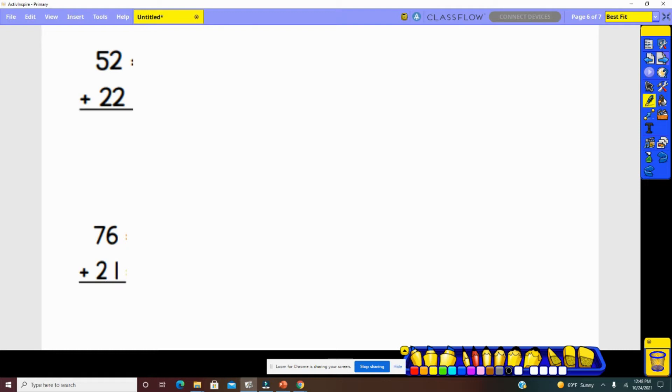Let's start with 52 plus 22. Our first step will be to see that the value of the 5 in the tens place is 50. The value of the 2 in the ones place is 2. Looking at 22, the 2 in the tens place has a value of 20. The 2 in the ones place has a value of 2.